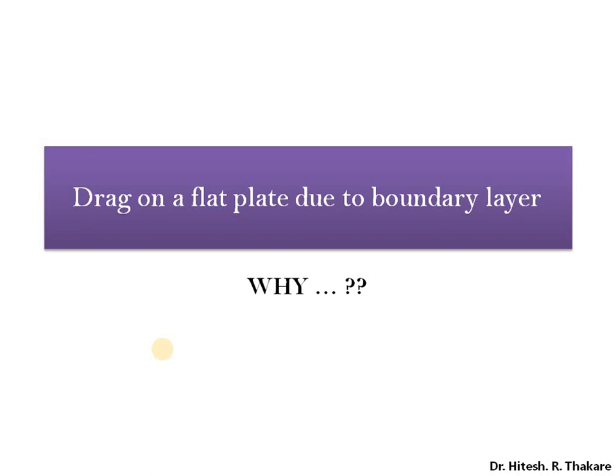Let us consider the second example. In the case of an aeroplane, the length of the aeroplane is very large, and that's why there is a significant passage available for atmospheric air to come in contact with the plane surface. Also, the wings of the plane are very long, so we can conveniently say that there is very much scope for the creation of a boundary layer on the plane surface.